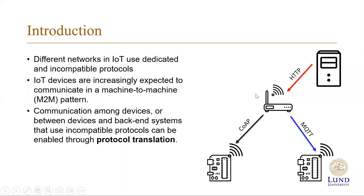First, I would like to start with the introduction. In IoT, different networks or applications use dedicated and incompatible protocols. And in IoT, devices are increasingly expected to communicate in a machine-to-machine pattern. Communication among devices or between devices and back-end systems that use incompatible protocols are enabled through protocol translation.